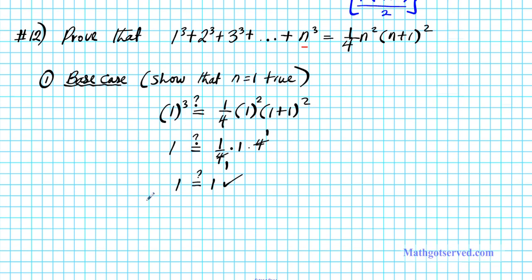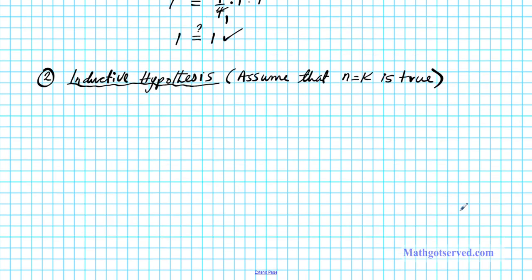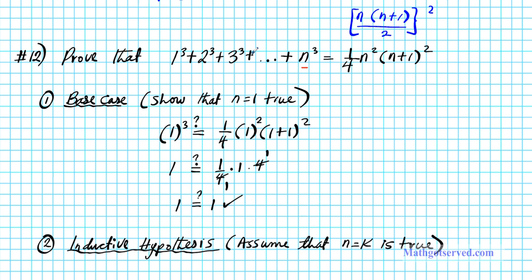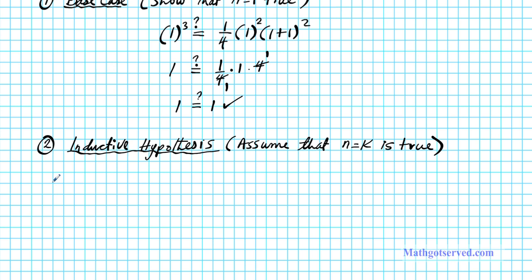Now let's move on to part 2 of our proof, which is the inductive hypothesis. Here we are going to make an assumption. For the inductive hypothesis, we are going to assume that n equals k is true. To communicate this with a mathematical statement, you simply rewrite the original problem replacing n with k. So n³ becomes k³, n² becomes k², and n+1 becomes k+1. That is how you write down your inductive hypothesis.